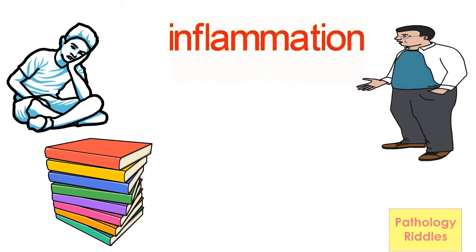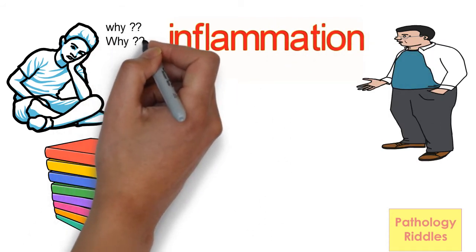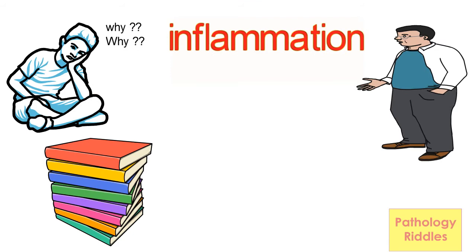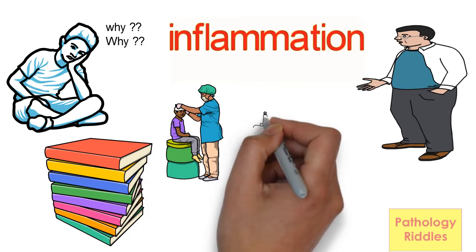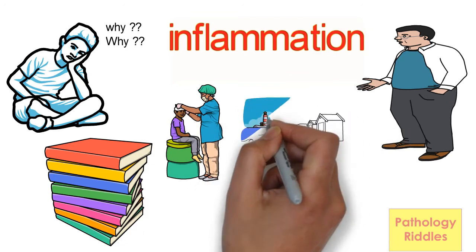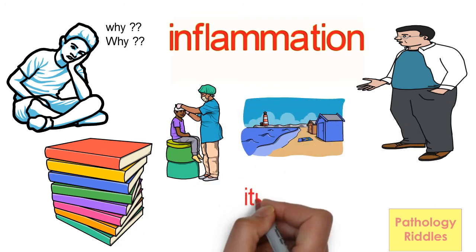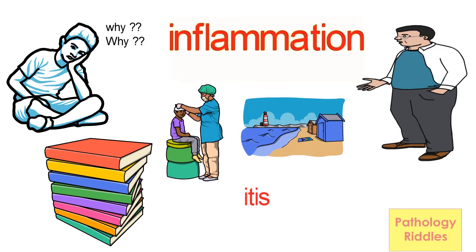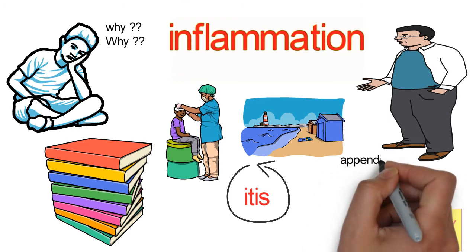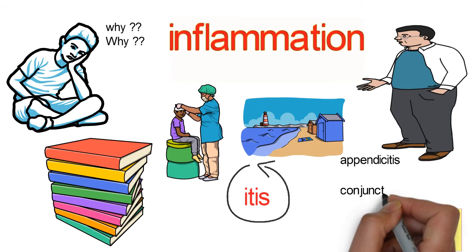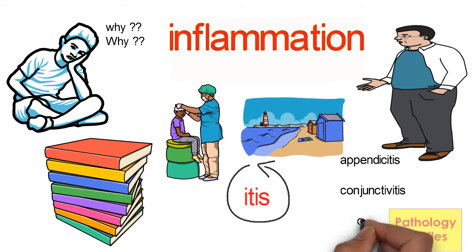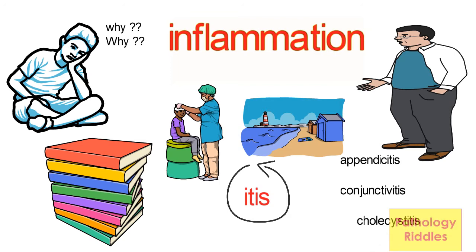To begin with, why do we need to know about inflammation? Because it happens whenever our body is injured, be it a minor cut, sunburn or infections. The organ which is inflamed is given the suffix '-itis' at its end. So for example, in appendix it will be appendicitis, in conjunctiva it will be conjunctivitis, in gallbladder it will be cholecystitis.